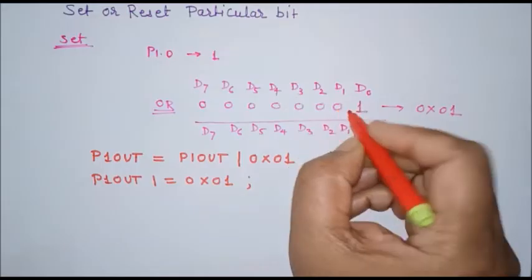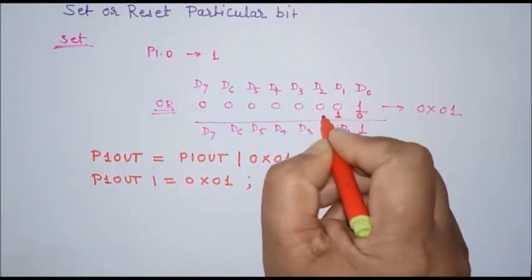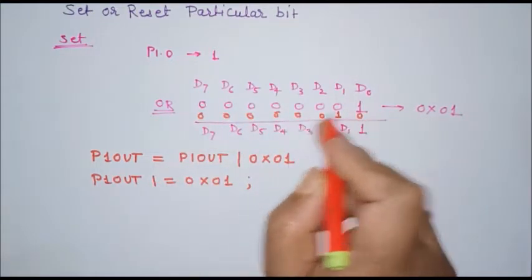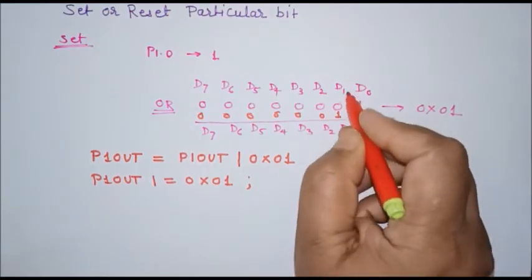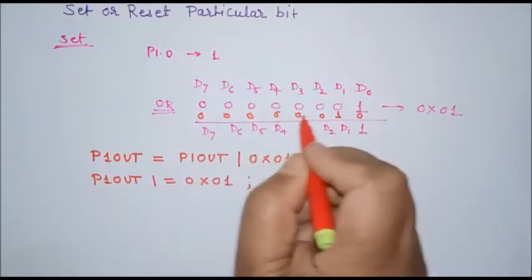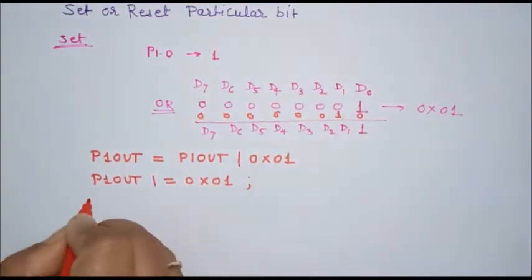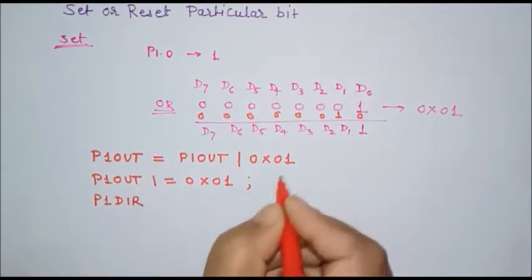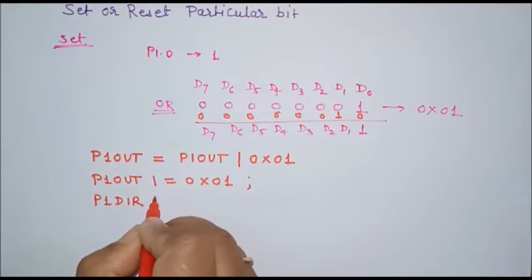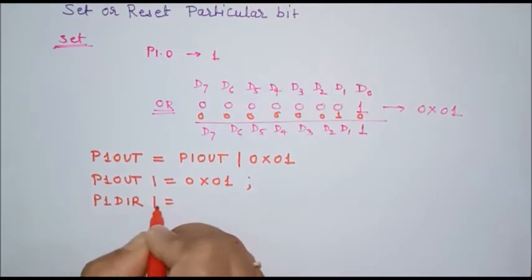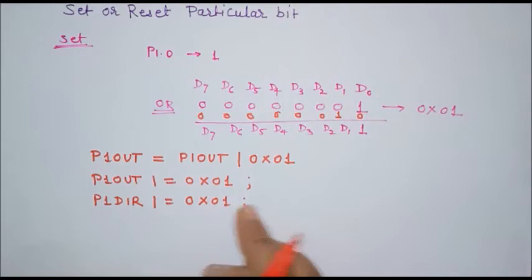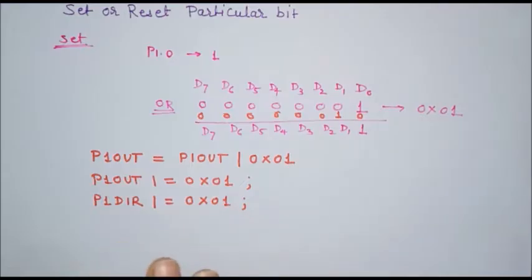If we want to set a different bit, we place a 1 at that bit position and 0 for all other bits. For example, we can OR the data with 0x20 to affect only that particular bit while all other bits remain as they are. The same approach can be used for the DIR register. For instance, to set the direction of p1.0 as an output port, we write: p1dir |= 0x01 — meaning we set the direction of p1.0 as output while all other bits' direction remains unchanged.